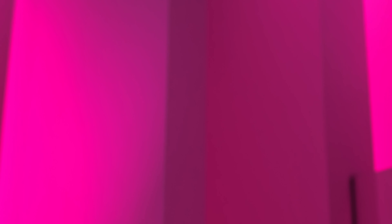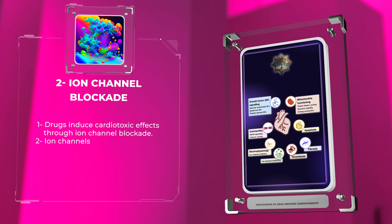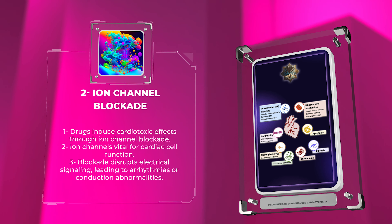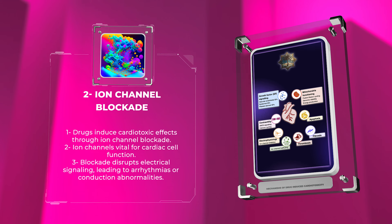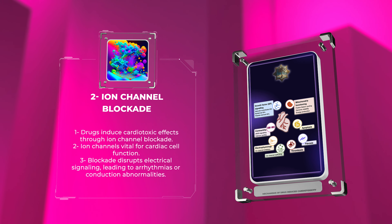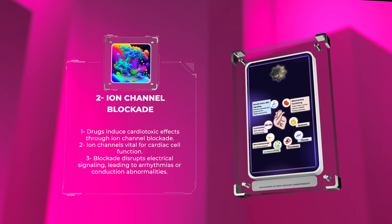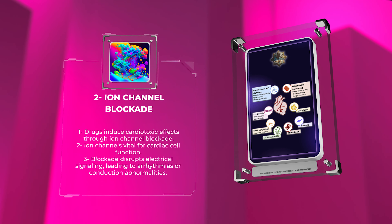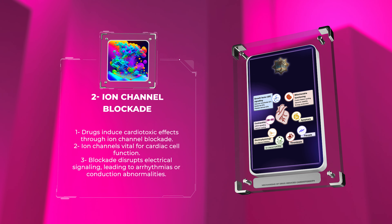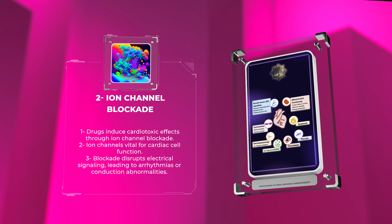One of the mechanisms by which drugs can induce cardiotoxic effects is through ion channel blockade. Ion channels play a vital role in the proper functioning of cardiac cells, regulating the movement of ions across the cell membrane. Drugs that selectively block specific ion channels can disrupt the normal electrical signaling in the heart, leading to arrhythmias or conduction abnormalities.